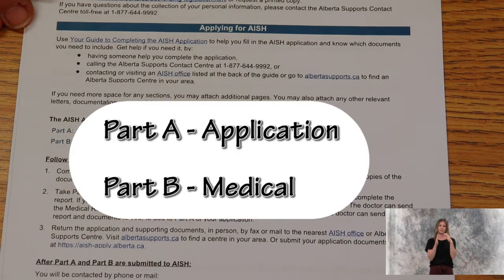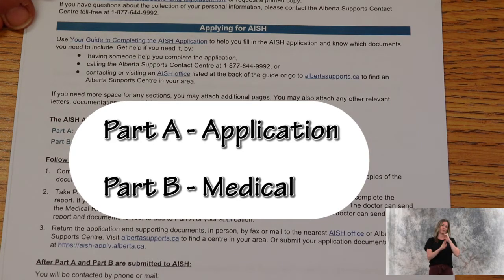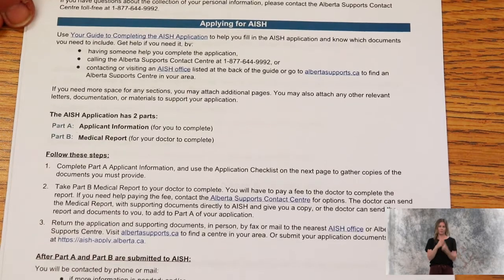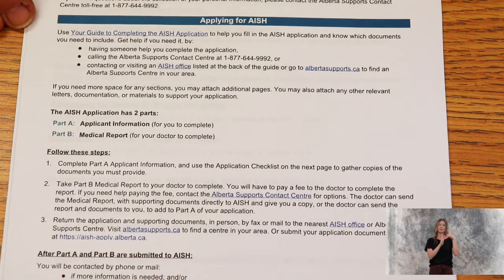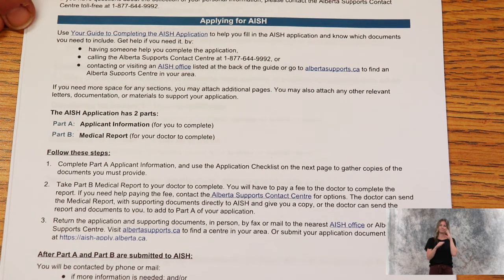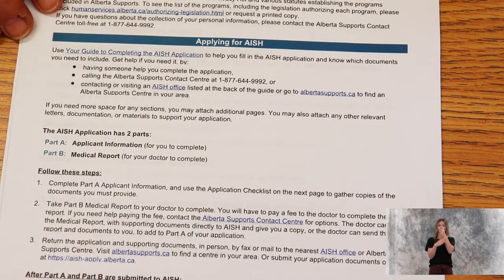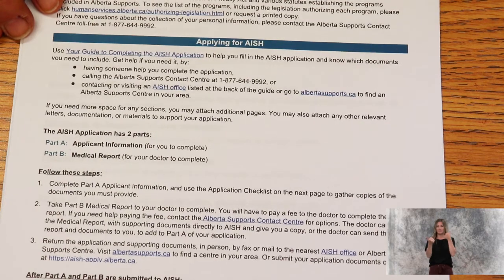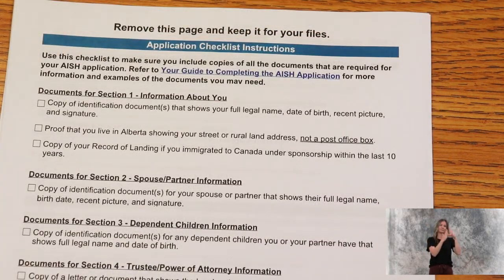The AISH application has two parts. Part A is the applicant's information and Part B is a medical report. You will need to have both parts filled out in order to have your AISH application sent in. They do not have to be sent in at the same time and can be filled out separately.